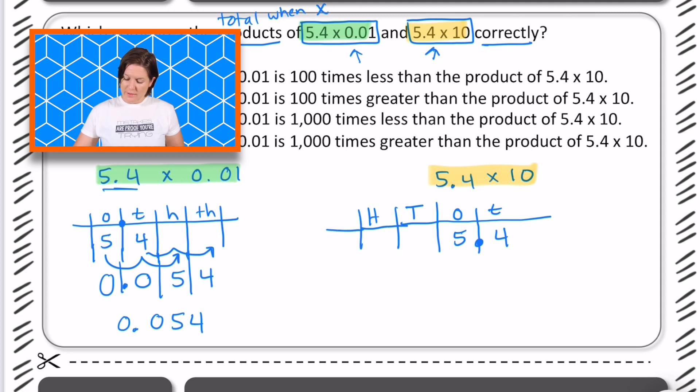And I'll put the one thousands place just in case. 5.4 is being multiplied by 10. So I'm shifting each digit one place to the left, making it one place bigger. So now the five is no longer in the ones place. It's in the tens place. The four is no longer in the tenths place. It's in the ones place. And here's where my decimal would be. So this is actually 54. So here's our new products.